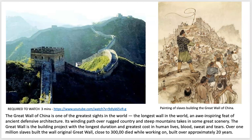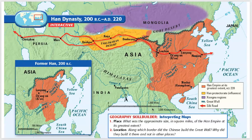Not only did he have this massive tomb built, he's also responsible for extending and connecting the Great Wall of China — one of the longest walls in the world. It was built over about 20 years, with tremendous human cost; supposedly over a million slaves built the Great Wall. It's a massive, impressive feat. The phenomenal legacy that this emperor left is incredibly impressive. Moving on to the Han dynasty, which came after the Qin dynasty.